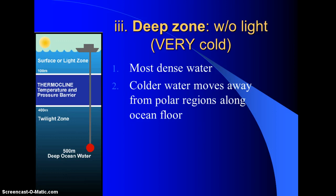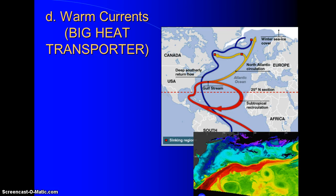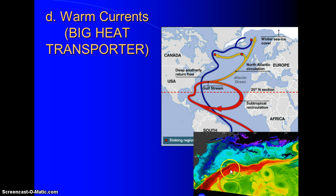Warm currents come up and around. This dotted line is not the equator — it's the 25-degree north line. Because of the Coriolis effect, we have clockwise movement of currents. Water picks up energy near the equator and heads to the west side of the ocean basin, so the west side is the warmest. This is an infrared image of the Gulf Stream — you can see the warmest area here.